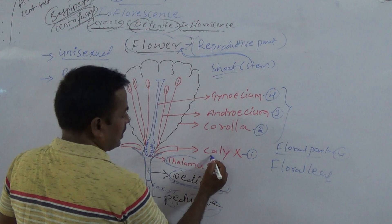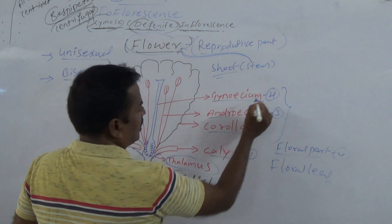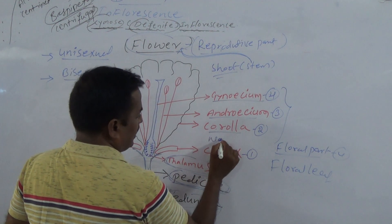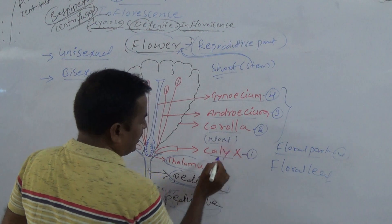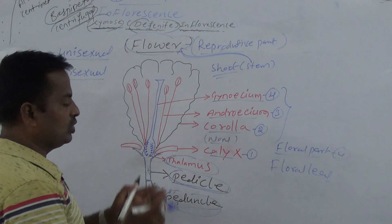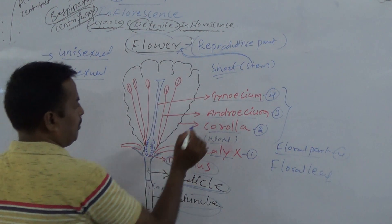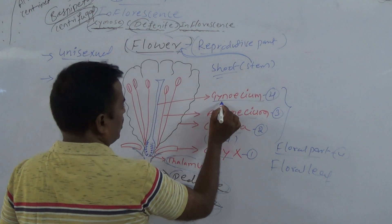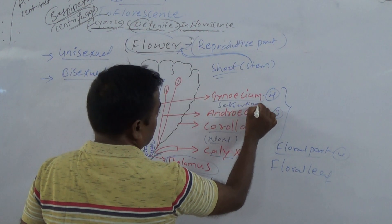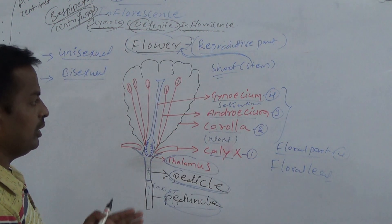The first floral part is Calyx, the second is Corolla, the third is Androecium, and the fourth is Gynoecium. Calyx and Corolla are both non-essential parts because they are not involved in the pollination and fertilization process. But Androecium and Gynoecium are called essential parts because both are involved in fertilization and pollination.